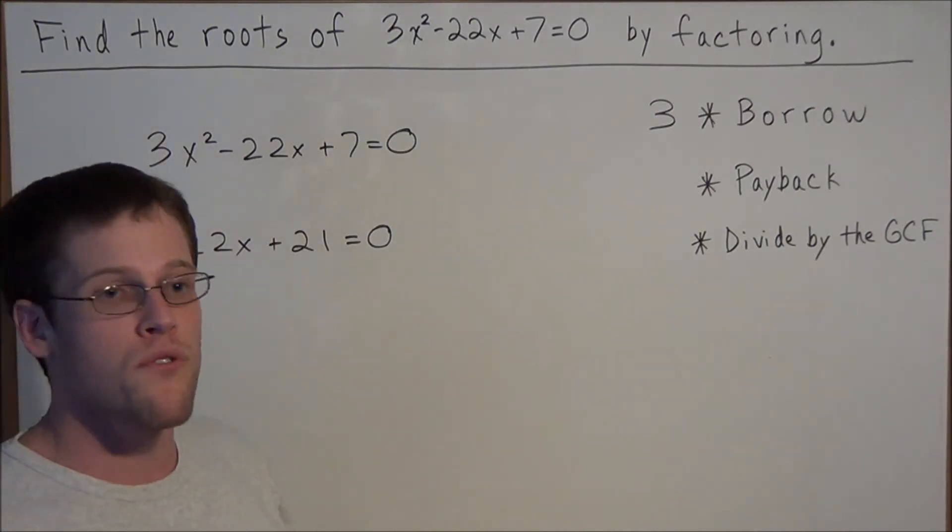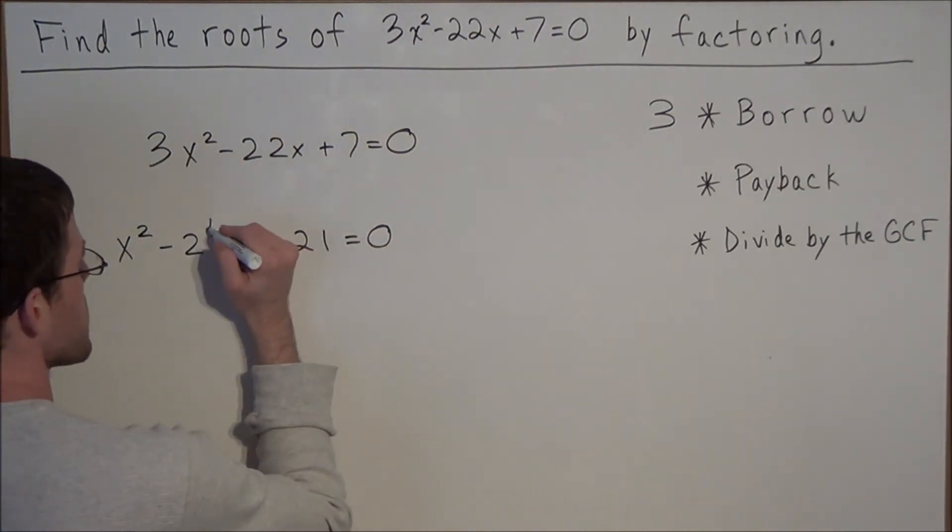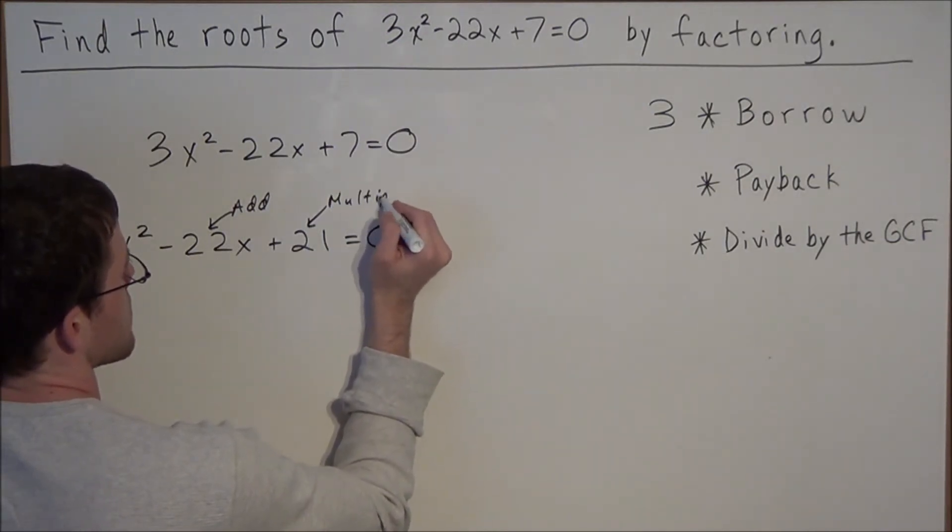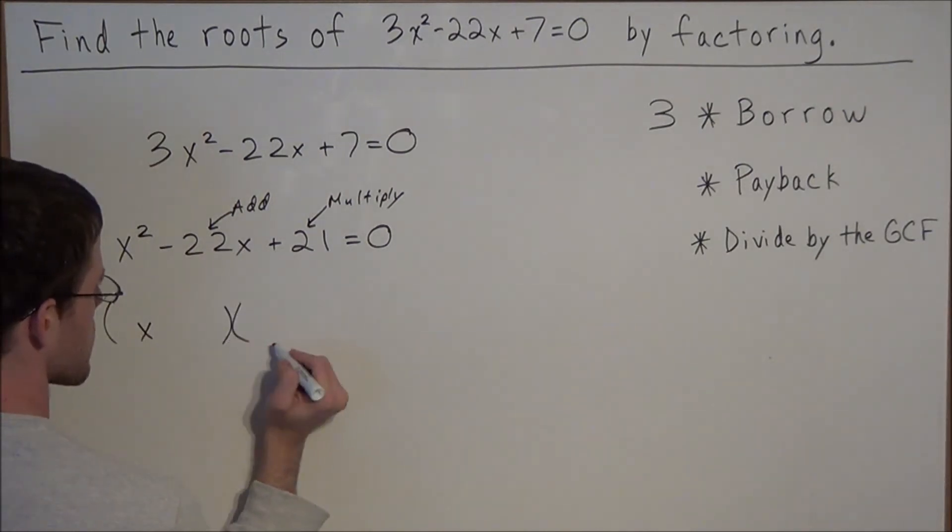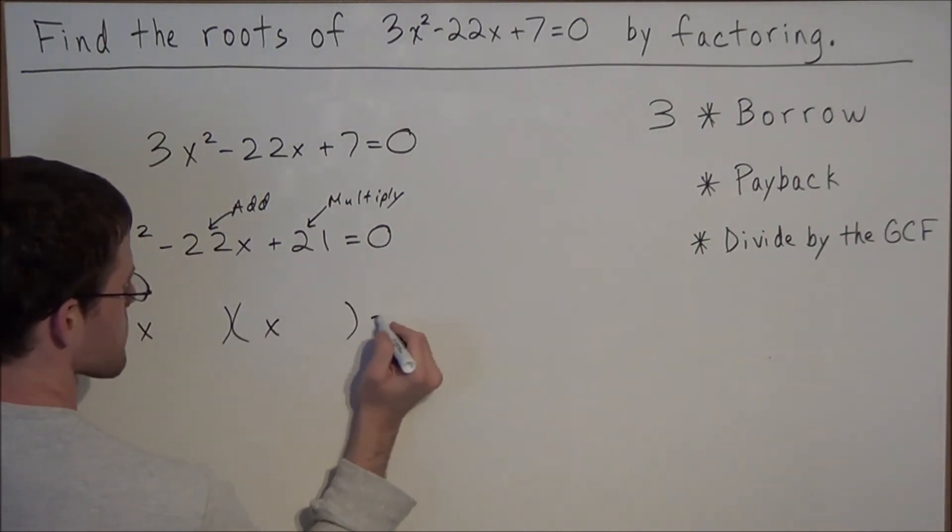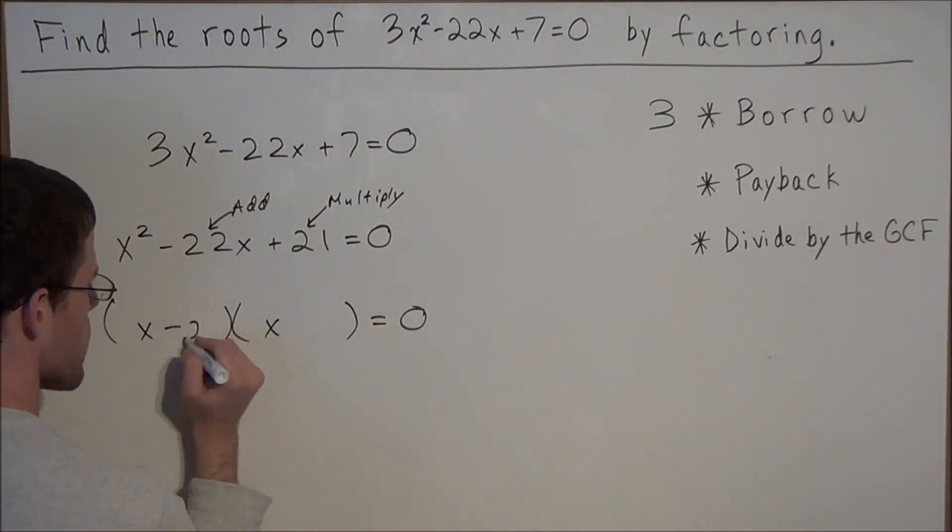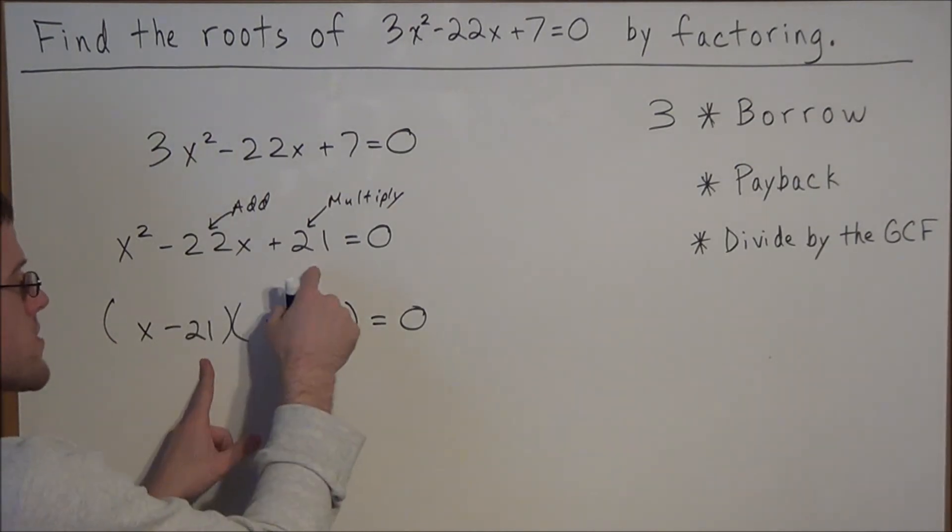Now we can move forward using the add multiply technique to factor this quadratic equation. We need two numbers that add to negative 22 and multiply to positive 21. We write our two binomials starting with an x. The two numbers would be negative 21 and negative 1. We can check: negative 21 plus negative 1 is negative 22, and if we multiply these two terms we have positive 21.